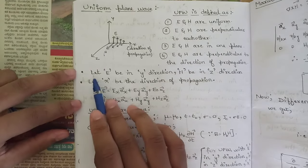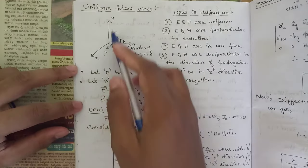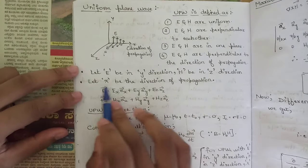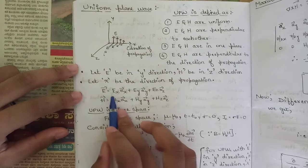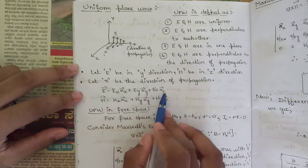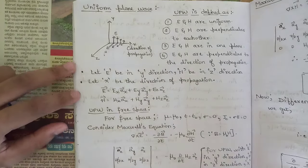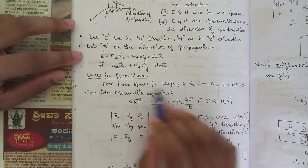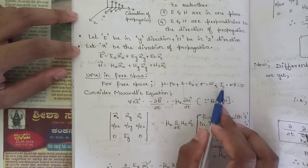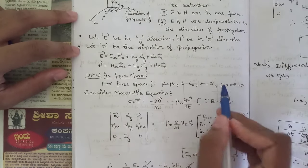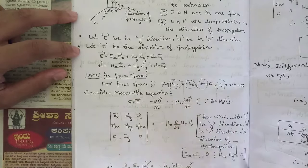Let E be in the y direction and H be in the z direction, and let x be the direction of propagation. So E equals Ex ax plus Ey ay plus Ez az, and the same for H. For a uniform plane wave in free space, the conditions are: mu equals mu naught, epsilon equals epsilon naught, and sigma equals zero, so the conduction current density JC equals sigma times E equals zero.